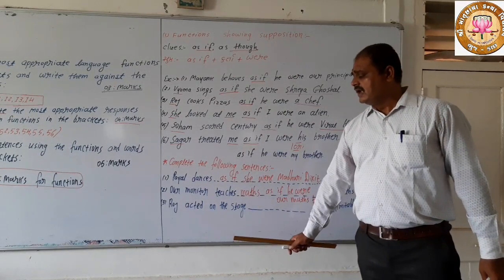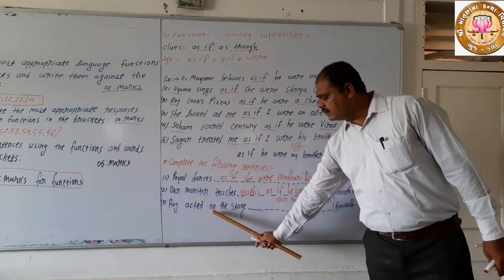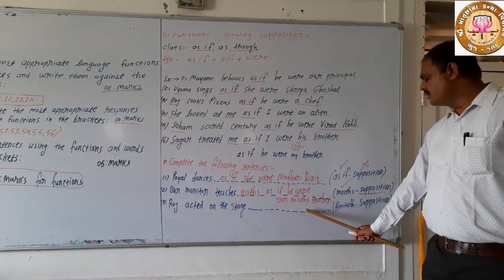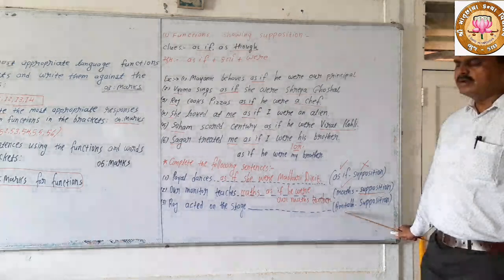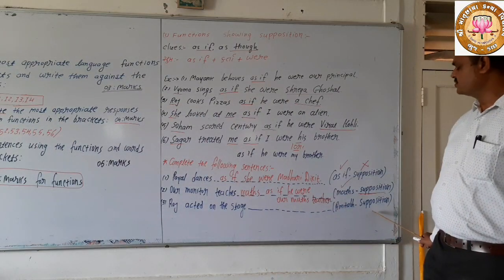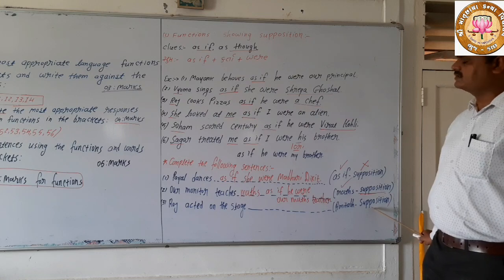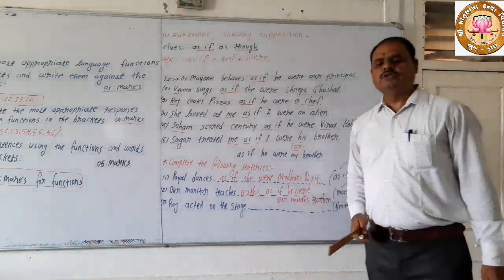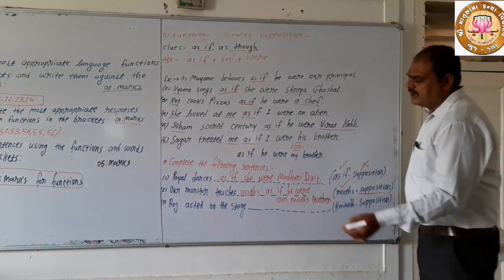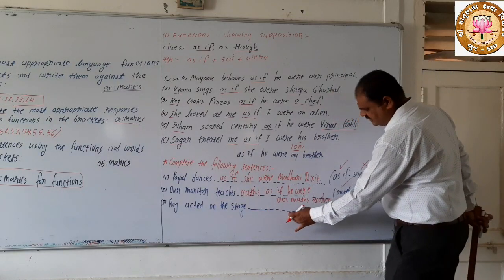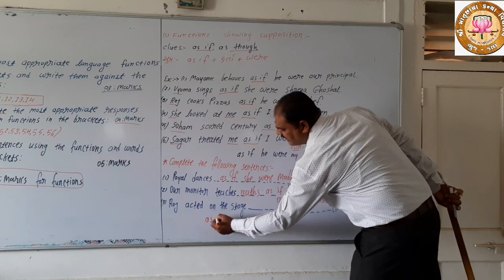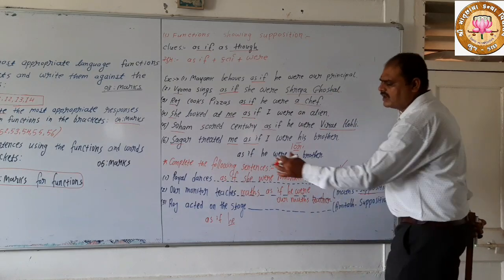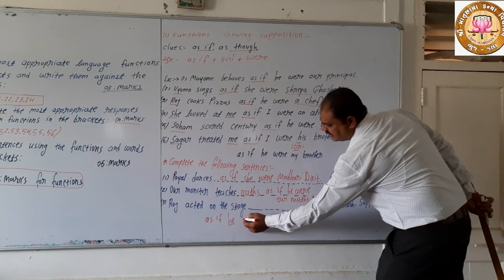Third example: 'Raj acted on the stage.' This sentence is complete — the function is supposition. Since Raj is a boy, we use 'he.' So the complete sentence is: 'Raj acted on the stage as if he were Amitabh.' That completes the third example.